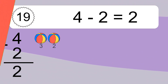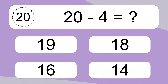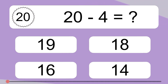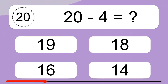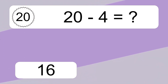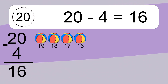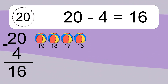20 minus 4 equals what? 20 minus 4 equals 16. Let's count it: 19, 18, 17, 16.